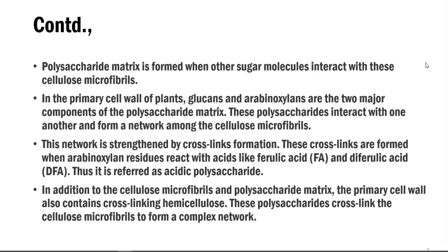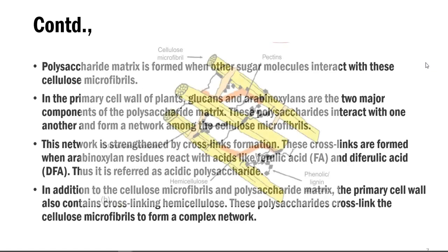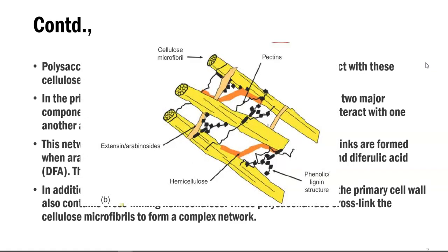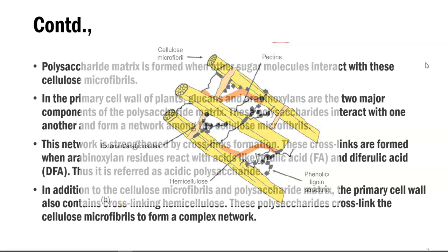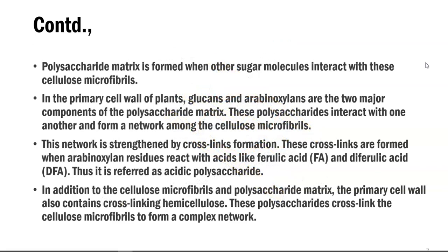This is the reason why this particular polysaccharide complex can be referred to as an acidic polysaccharide. In addition to the cellulose microfibrils and polysaccharide matrix, the primary cell wall also contains other cross-linking molecules such as hemicellulose. These polysaccharides cross-link the cellulose microfibrils to form a highly complex network in the plant system.